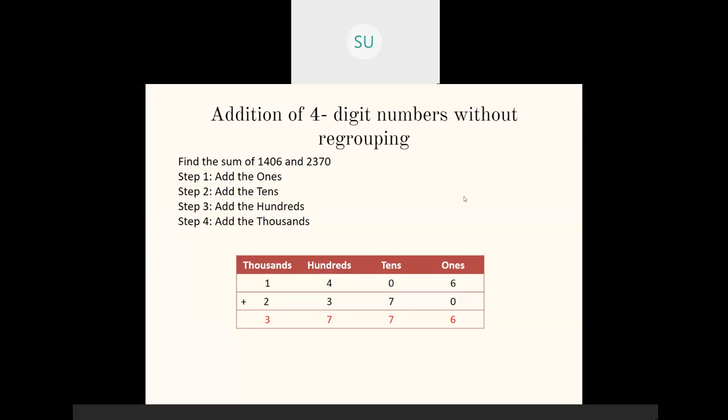First we saw addition of four-digit numbers without regrouping. Regrouping means: if we have 6 plus 4, we get 10, but we can't write 10 in a single place. So we regroup it as 1 ten and 0 ones and carry it over. That is called regrouping.